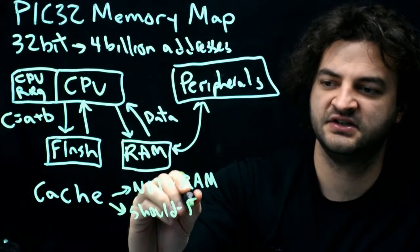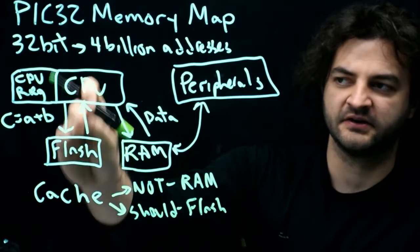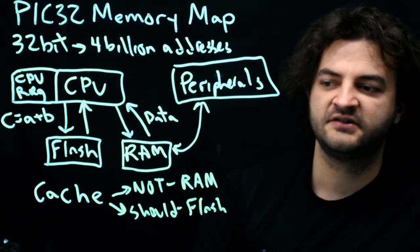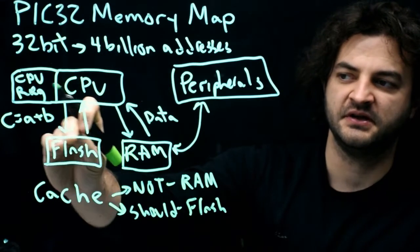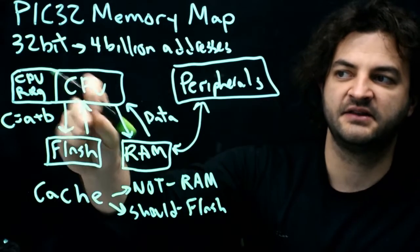Things that should definitely be cached are things that are slow to access. For instance, flash. Our instructions only run at like 30 megahertz. That's as fast as you can get them out of memory. But the CPU can run faster than that. So it'd be nice if the CPU could prefetch them from flash, store them in the cache, and then make them available faster.